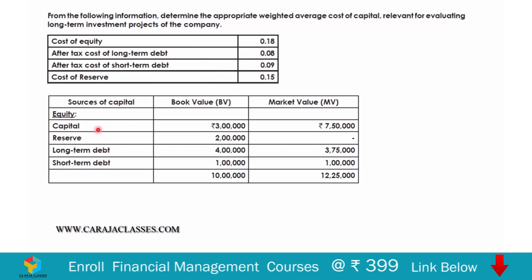We also have cost of reserves at 15% (0.15). The sources of capital provided are: equity capital of 3 lakhs with a market value of 7 lakh 50 thousand, reserves of 2 lakhs with no separate market value, long-term debt of 4 lakhs with a market value of 3 lakh 75 thousand. Short-term debt is irrelevant as stated, so we proceed with these figures.